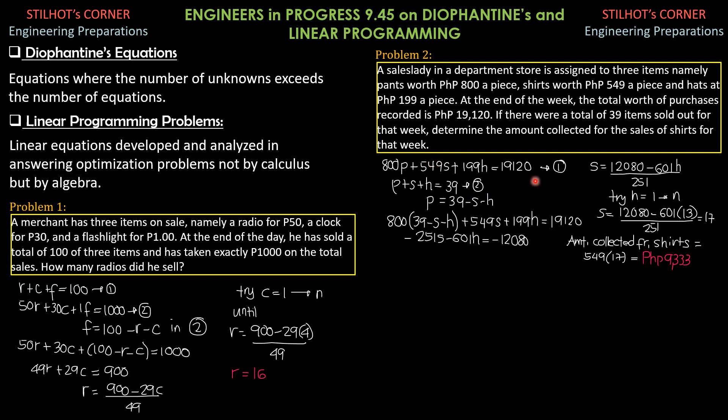For the sales, 800 pesos per pant times number of pants plus 549 pesos per shirt times number of shirts plus 199 pesos for 1 hat times H equals 19,120. Call that equation 1. For the number of pants plus shirts plus hats equals 39. Then, the number of pants therefore is 39 minus S minus H. So, substitute into equation 1.